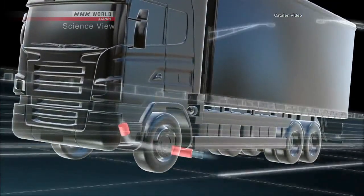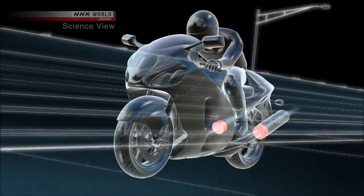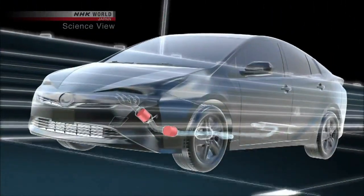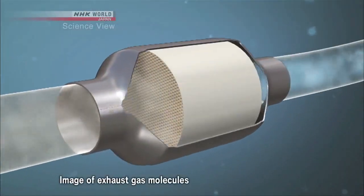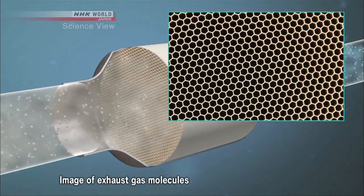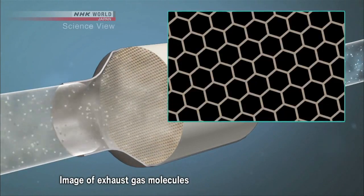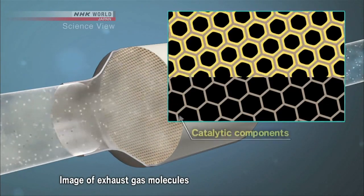The catalytic converter is placed close to the engine or on the underside of the car and lets exhaust gas flow through from the engine. The body is made with ceramics and metal, and the inside is coated with a catalytic agent.